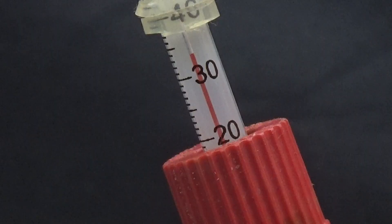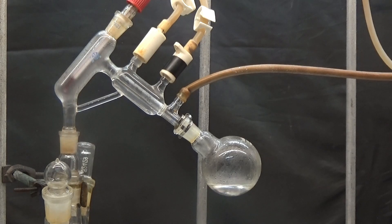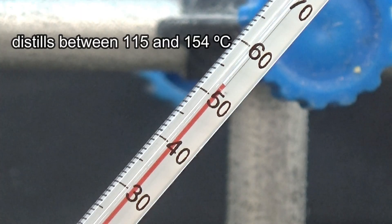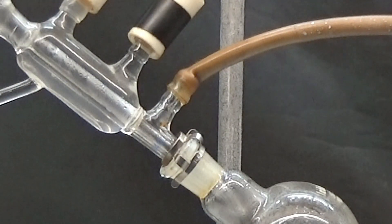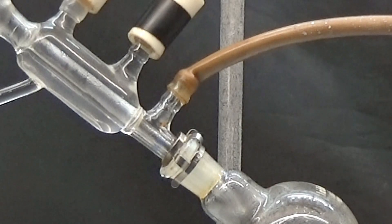Let it cool down. Distill the product obtained in a 100 milliliters flask, collecting the portion that distills between 115 and 154 degrees. Eliminate any hydrogen bromide vapors by connecting the distillation equipment's outlet to the fume hood.